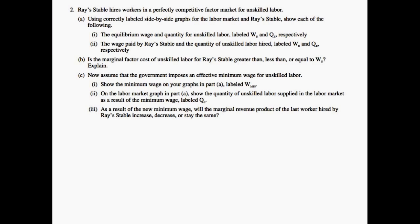This question essentially states that Ray Stable hires workers in a perfectly competitive factor market for unskilled labor. Using correctly labeled side-by-side graphs for the labor market and Ray Stable, show each of the following: the equilibrium wage and quantity for unskilled labor and the wage paid by Ray Stable and the quantity of unskilled labor hired. So let's first think about what a perfectly competitive factor market entails before jumping into the question.